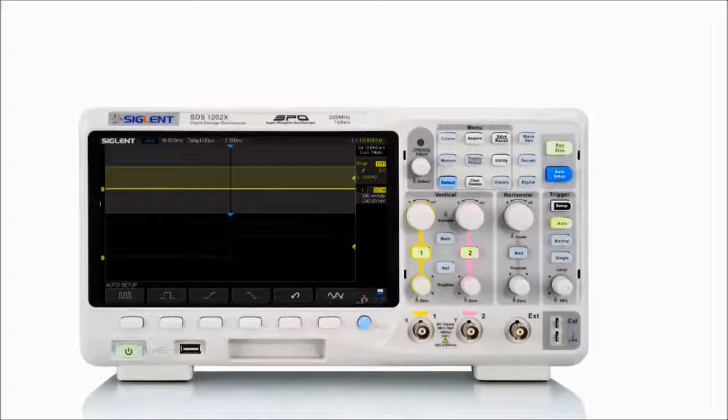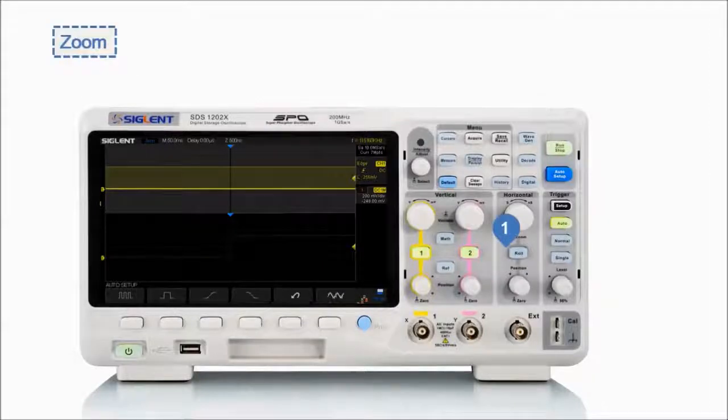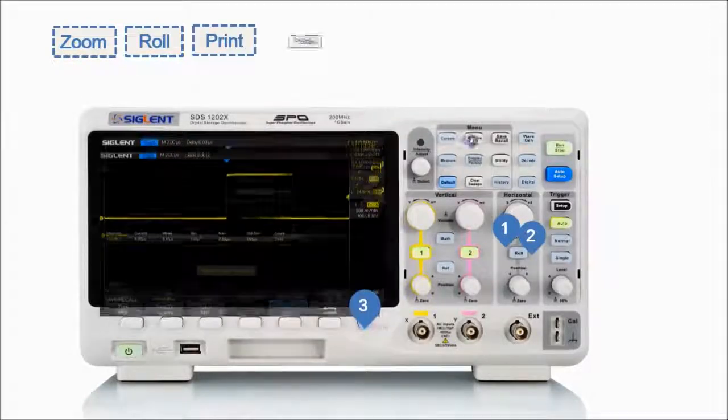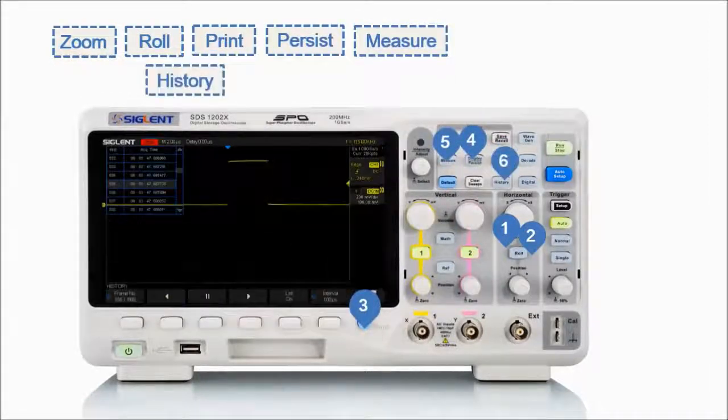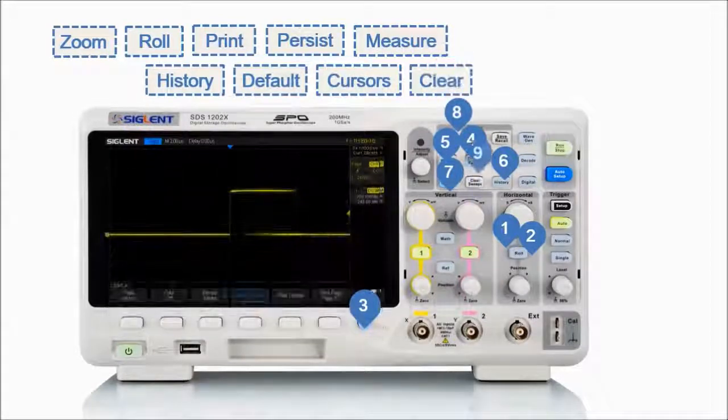The most commonly used functions are accessible using 10 different one button operation keys, including zoom, roll, print, persist, measure, history, default setup, cursors, clear sweep, and auto setup.